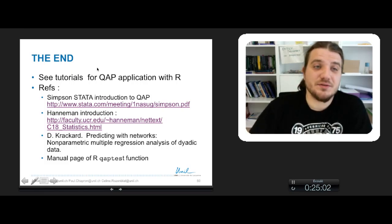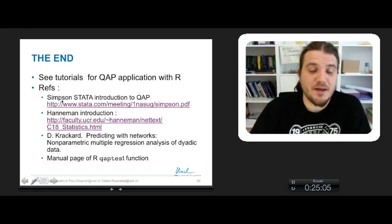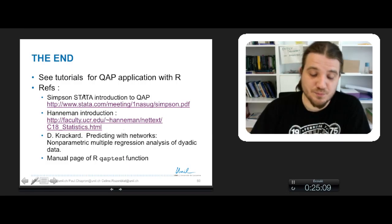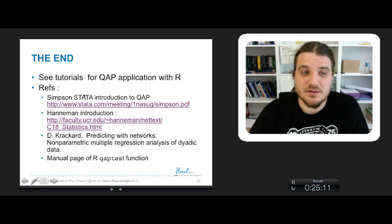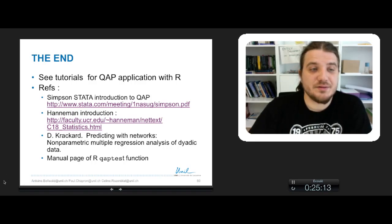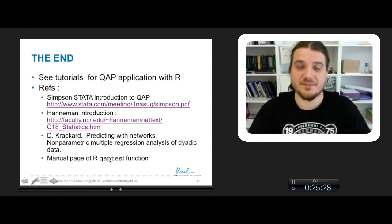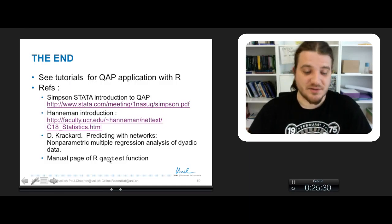You can see tutorials for QAP application with here. And these two links are pretty useful to understand the issues with QAP. The main publication should be Predicting with Networks Non-Parametric Multiple Regression Analysis of Dyadic Data by Krackhardt. And you can also check the manual page of R for QAP test warning that we have just seen. Okay, that's it for this course. Thank you.